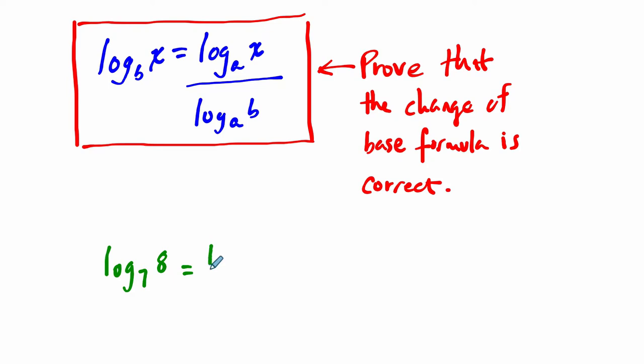You could rewrite this as the log of any base, say natural log of 8 over the natural log of 7, or the log of 8 over the log of 7, common base, or really anything you want. Let's say the log base 5 of 8 over the log base 5 of 7. These are all equal things, and you can keep going.